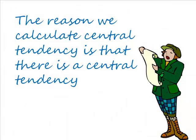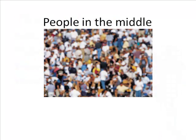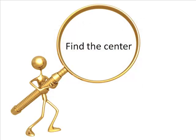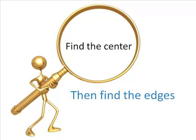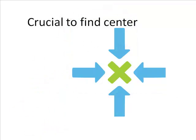So the reason we calculate central tendency is that there is a central tendency — scores tend to be in the center of a distribution. On any given variable, most people are in the middle. Finding the center is the first step to understanding a variable. The next step is finding how far the scores are from the center, but we need to find the center first. It's crucial that we find a good estimate of where the center is.